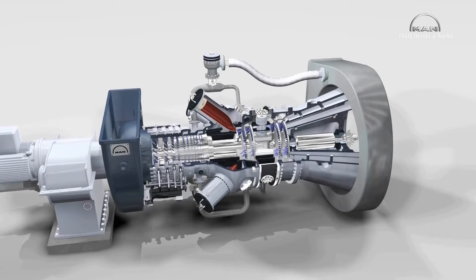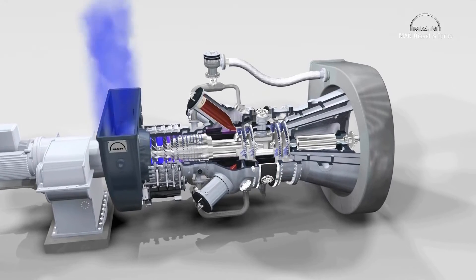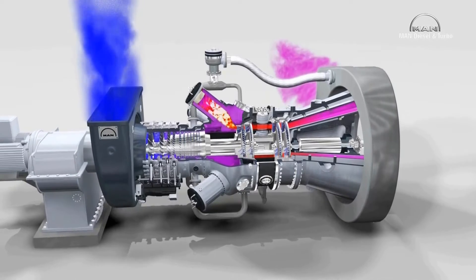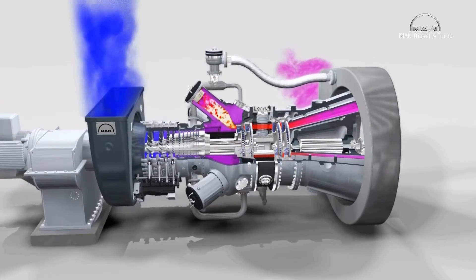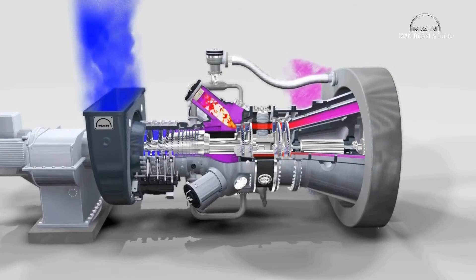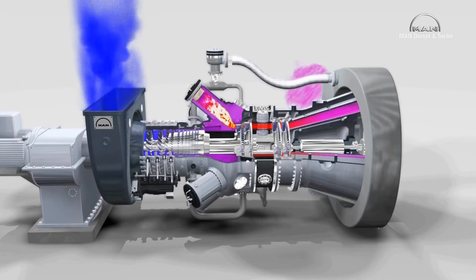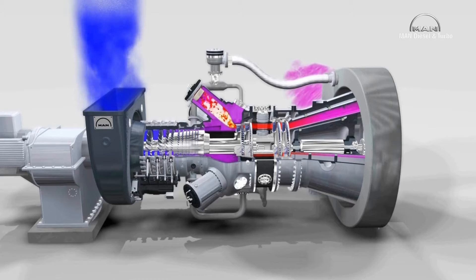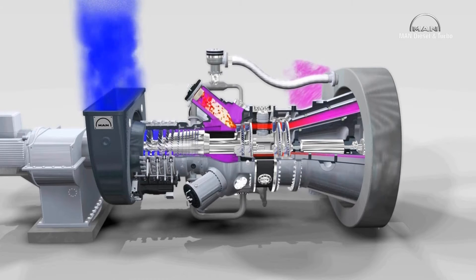The compressor driven by the high-pressure turbine serves to take in and compress the air needed for combustion. Inside the six combustion chambers, the air is mixed with fuel gas and the mixture is ignited. The hot exhaust gases expand, driving both the high- and the low-pressure turbines.